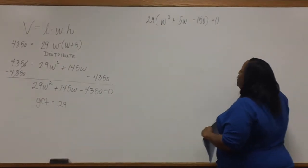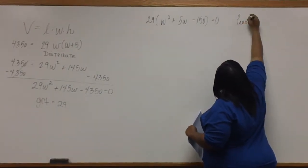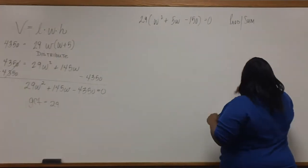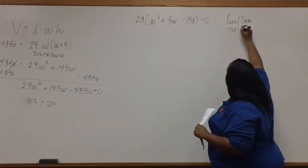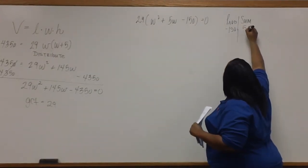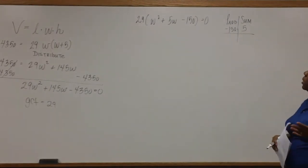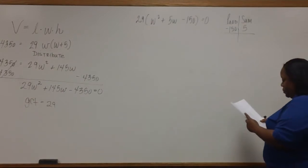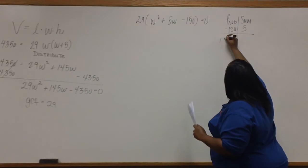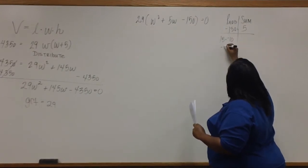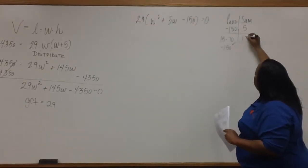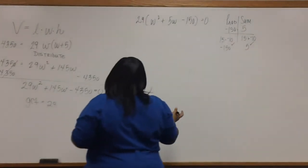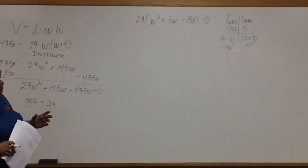Now we're ready for product sum. One times negative 150 is negative 150. This is our product. And our sum is five. So we need two numbers that when we multiply them, we get a product of negative 150, but when we add them we get a sum of five. Fifteen times negative 10 is negative 150, so this works for us. And 15 plus negative 10 gives us the positive 5 that we need. So we'll be filling in the middle with a positive 15W and a negative 10W.